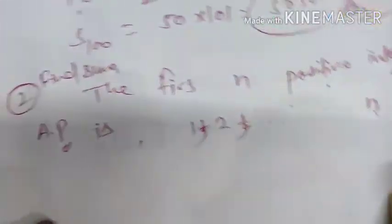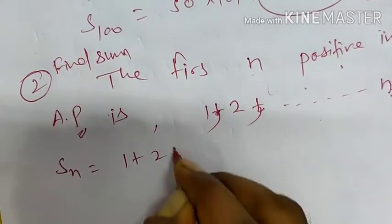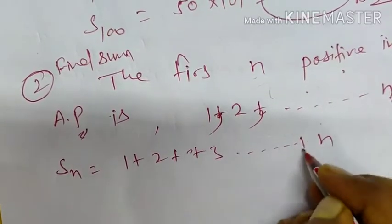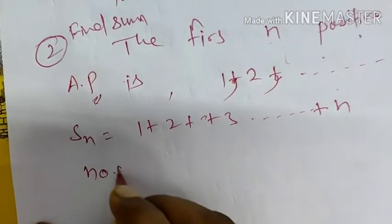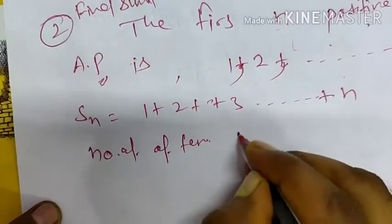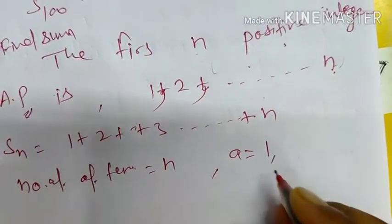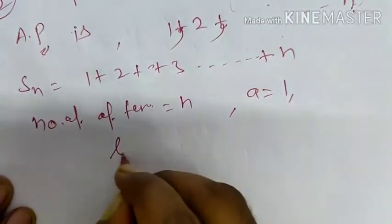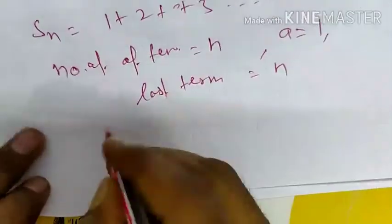The sum will be Sn = 1 + 2 + 3 up to n. Here the total number of terms is n, the first term equals 1, and the last term is also n.